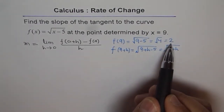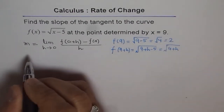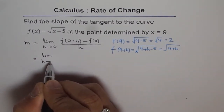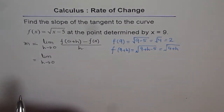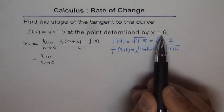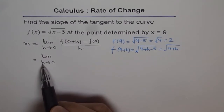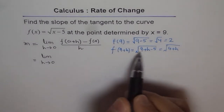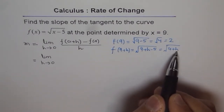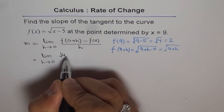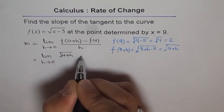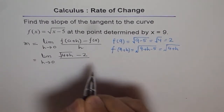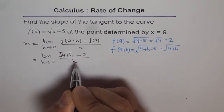The y-value is 2 at x = 9. So the slope equals the limit as h approaches 0 — meaning we're taking a point very close to x = 9, where h is approaching 0. So we write: [√(4 + h) − 2] divided by h.